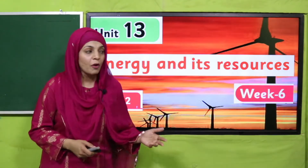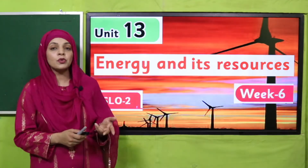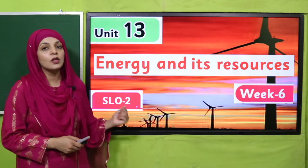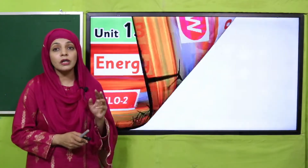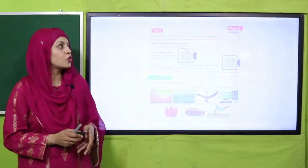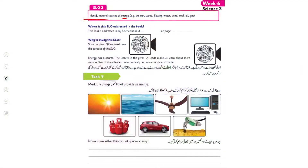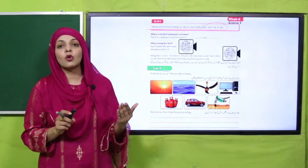My dear students, as you know we are on Unit Number 13. The name of our unit is 'Energy and Its Resources.' This is week number six, SLO number two. According to this SLO, students will be able to identify natural sources of energy: the sun, wood, flowing water, wind, coal, and gas.